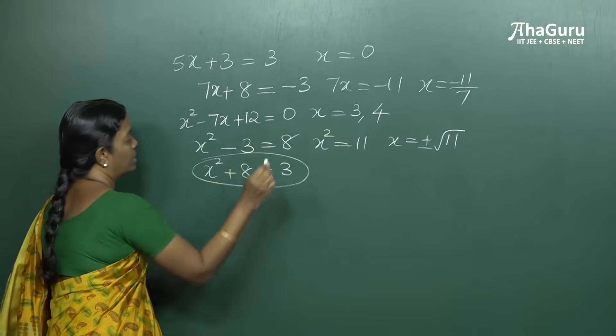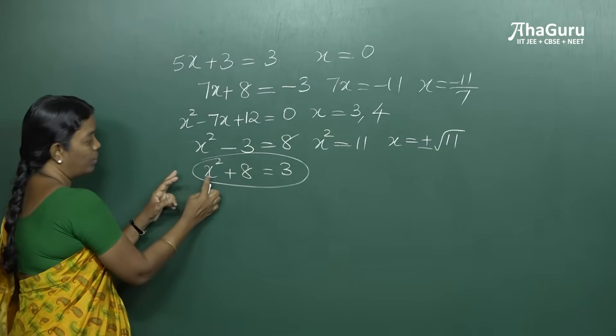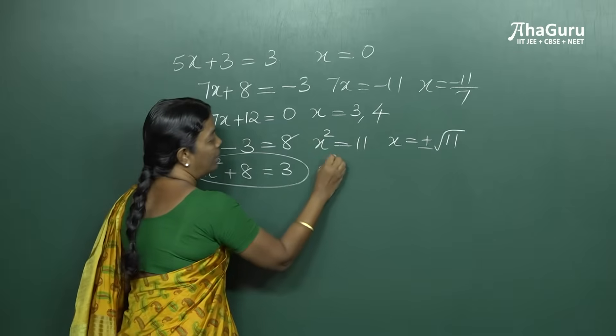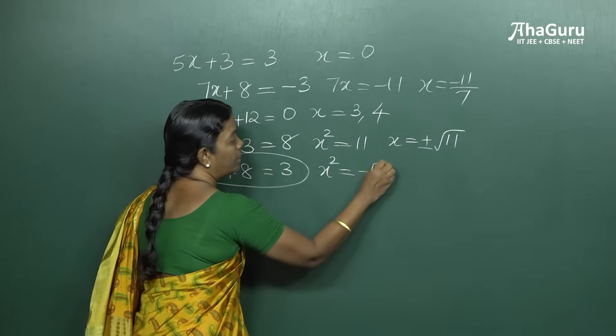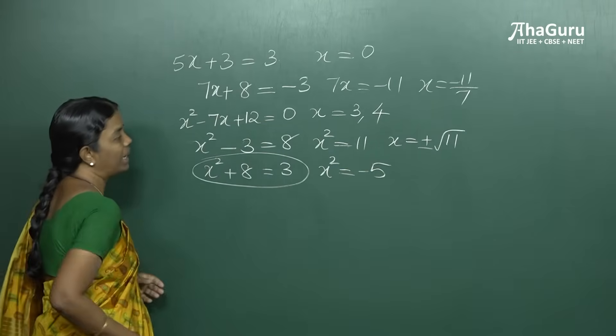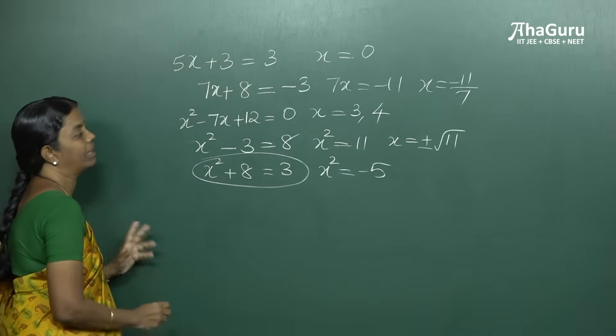Now come back to this equation. When you solve it, you get x squared to be equal to minus 5 — that is, 3 minus 8 — so you get a negative value.